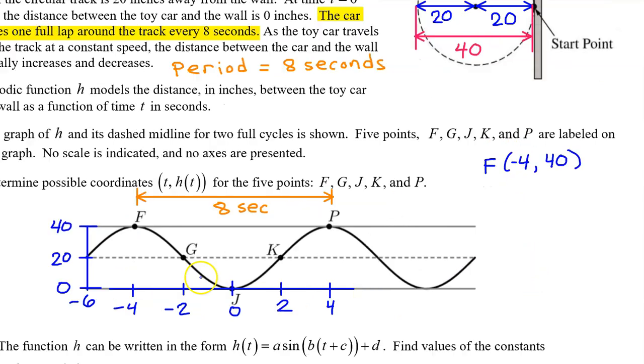Now we have the input coordinates and the output coordinates for all five points. So let's make a list. Point F is at negative four comma 40. Point G is at negative two comma 20. Point J is at zero comma zero. Point K is at two comma 20. And point P is at four comma 40.